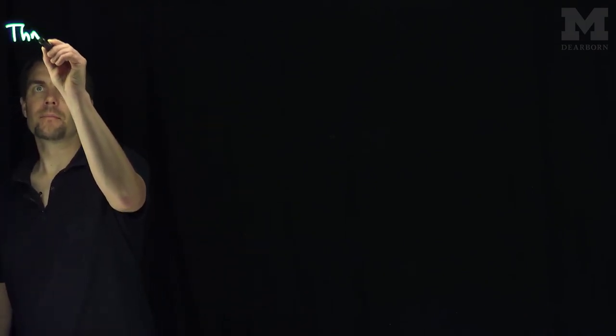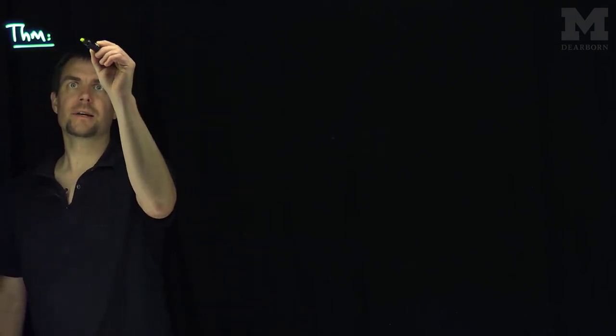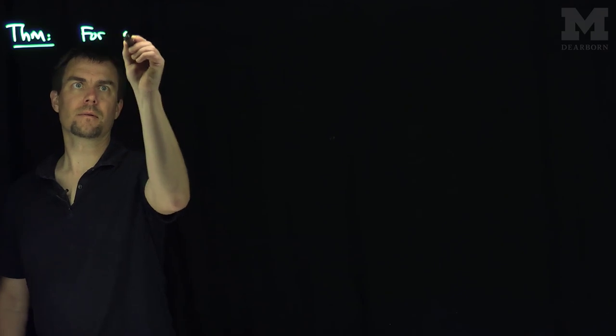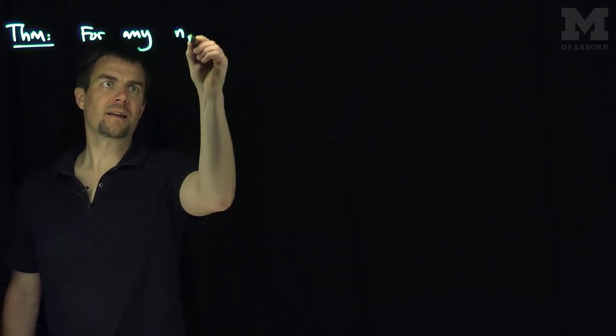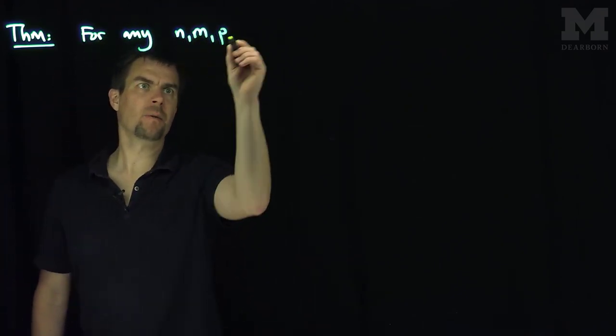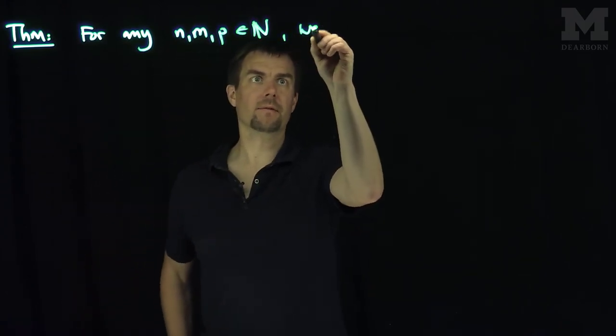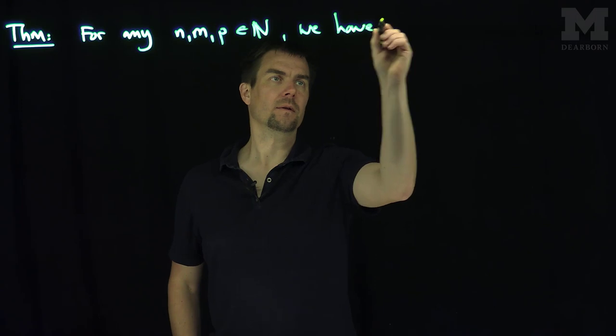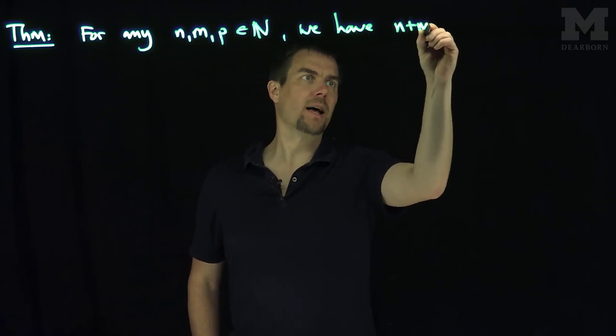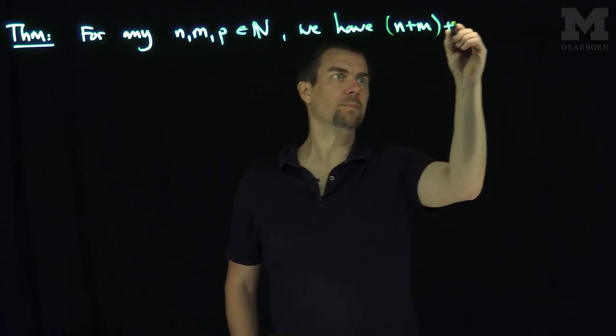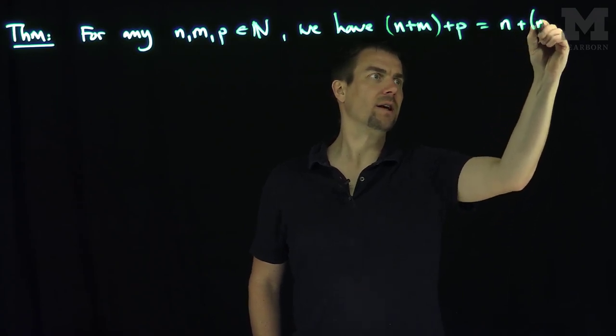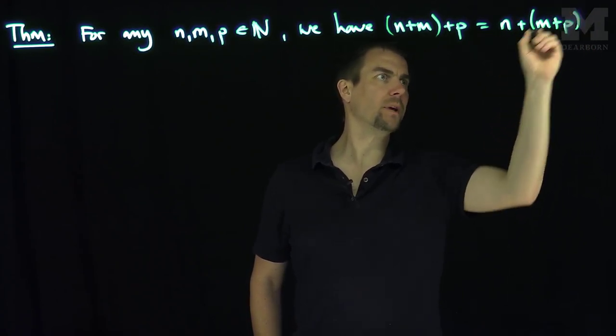And so our theorem will be that for any n and m and p natural numbers, we have the following: we have that (n+m)+p is equal to n+(m+p).